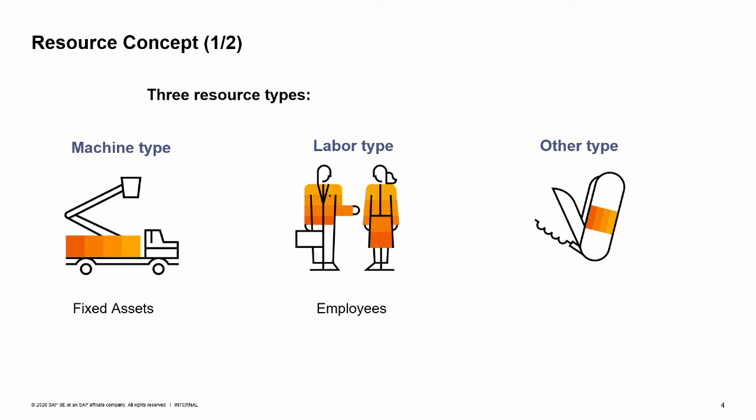The resource is defined as master data in the system. There are three types of resources. Machine type: a resource that can be linked to one or more fixed assets, taken from the fixed assets master data list. Labor type: a resource that can be linked to one or more employees, taken from the employee master data list. Other type: any other resource that is not a machine or labor.